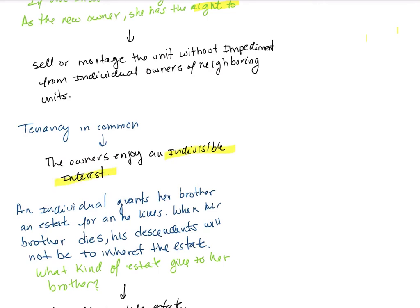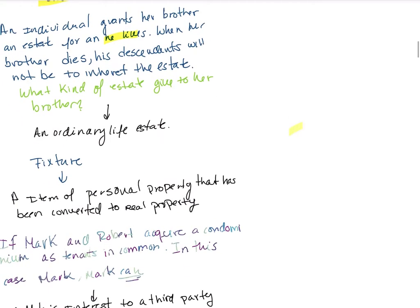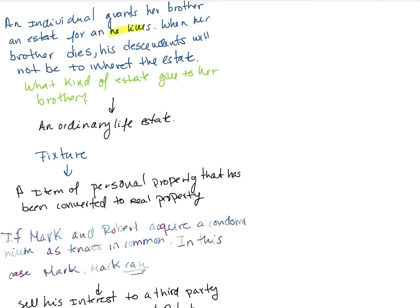If an individual grants her brother a life estate and the brother dies, the descendants will not be able to inherit the estate. That's an ordinary life estate — meaning the property is yours only while you are alive. If you die, your family will not get the property simply because they are your family.